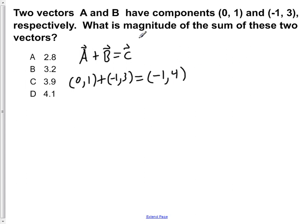Now the question is asking for the magnitude of the sum of the two vectors, so we need to figure out what the magnitude of this is. We realize that this is the x component and this is the y component. So we have an x component of -1 and a y component of 4, and we want to know what the magnitude is.